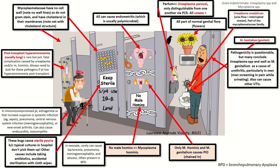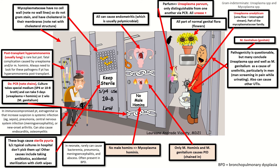The post-transplant hyperammonemia patient, usually a lung transplant, is a rare but potentially fatal complication caused by ureaplasma or mycoplasma hominis. You always need to look for these pathogens if the patient has hyperammonemia post-transplant. You'll notice the NH3 graffiti on the bathroom stall in yellow for the urine, representing post-transplant hyperammonemia.